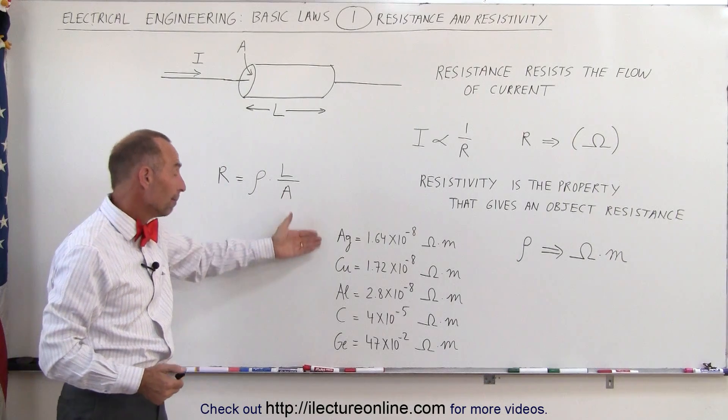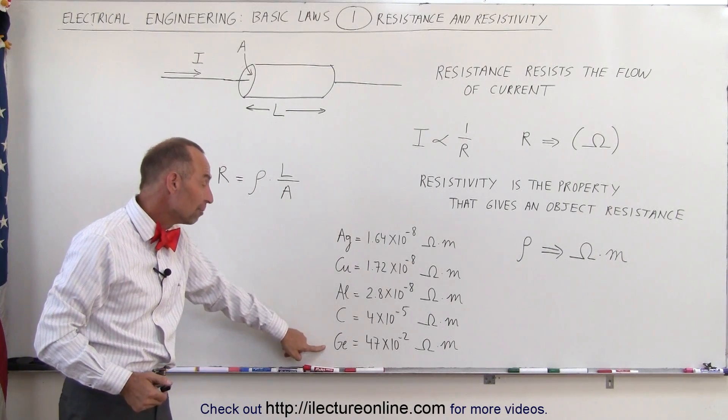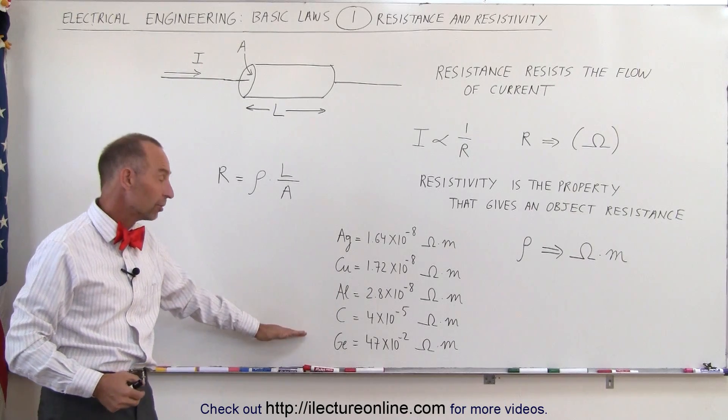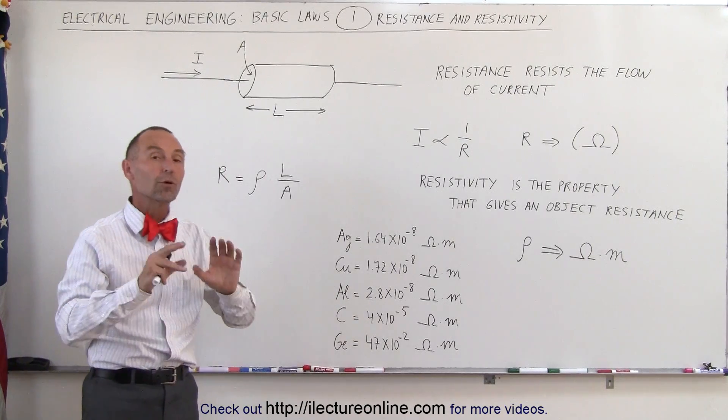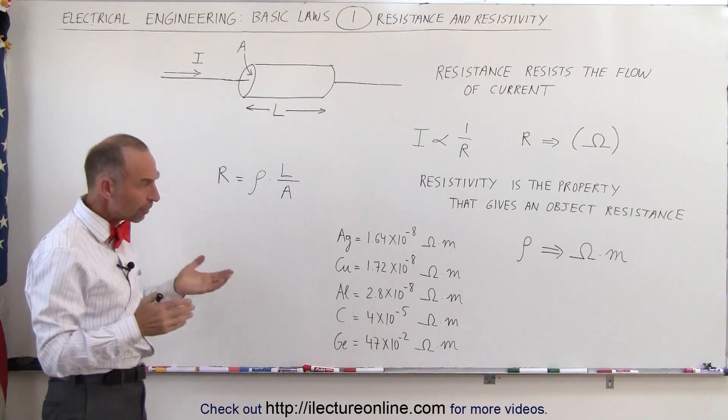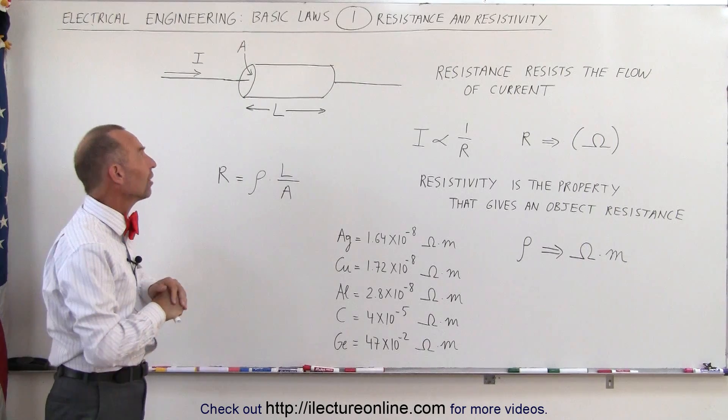In comparison to metals, you can see that carbon and germanium have much higher resistivities. These fall in the category of semiconductors. You can see that they're much more opposed to the flow of current than metals are. That gives us a good basis of understanding.